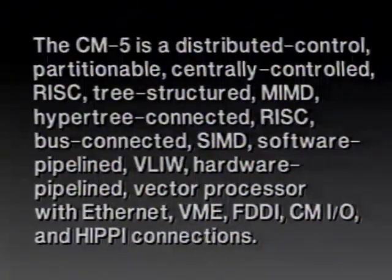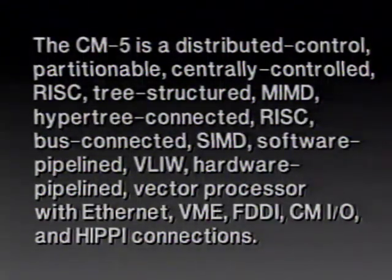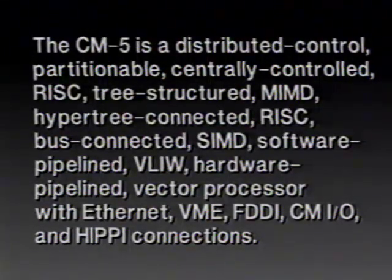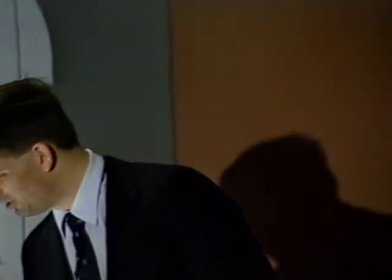The CM5 is a distributed, controlled, partitionable, centrally controlled, RISC tree-structured, MIMD, hyper-tree-connected, RISC bus-connected SIMD software pipeline, VLIW hardware pipeline vector processor with all kinds of I/O connections. This is a true, accurate characterization of the hardware from top to bottom, and it would appear that we've used almost every hardware technique in the book. I used to remark we've used every hardware technique except Dataflow, but it's recently come to my attention that people have been designing Dataflow compilers targeted to the CM5, so I'm not even going to disclaim that one.